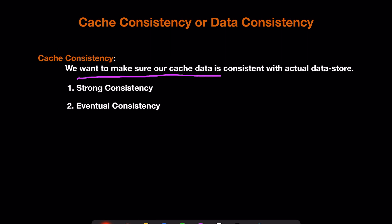Another important metric is cache consistency — ensuring our cached data is consistent with the actual data store like a database. There are two types of consistency: strong consistency, which means the cache and database have exactly the same data at any given time, and eventual consistency, which means the data is not exactly the same at the same moment but will eventually become consistent — perhaps after some milliseconds or seconds.